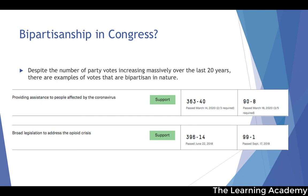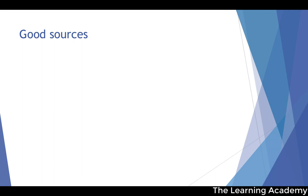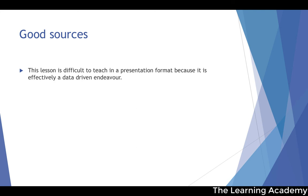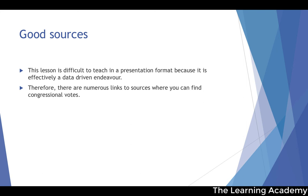Generally speaking, both parties share broad ideological goals — such as assisting people through the coronavirus pandemic — but the specific policy details are very difficult to reconcile between the two. This lesson is difficult to teach in a presentation format because it's very data-driven. There are numerous links to sources in the description where you can find congressional votes as recent as this week — both partisan and bipartisan — providing really up-to-date data. In the next lesson, we're going to talk about congressional oversight before discussing the relationship between Congress and the other branches of government.